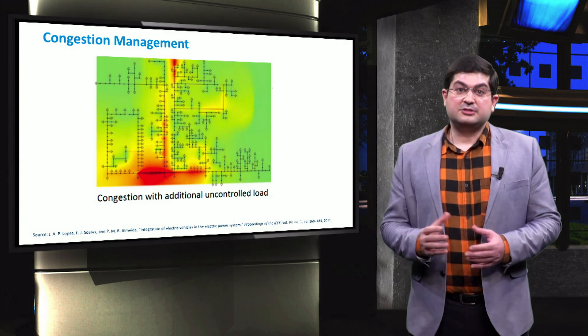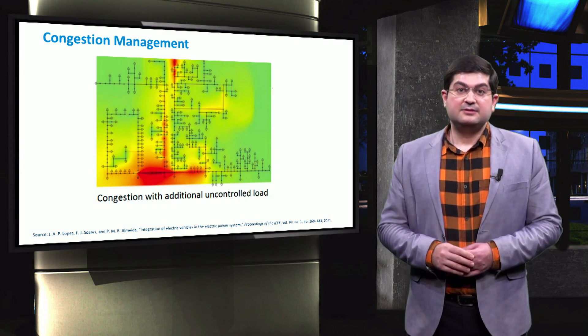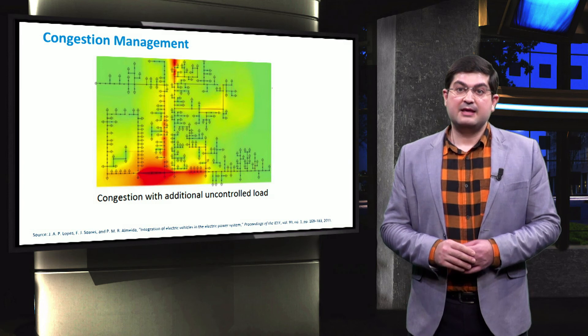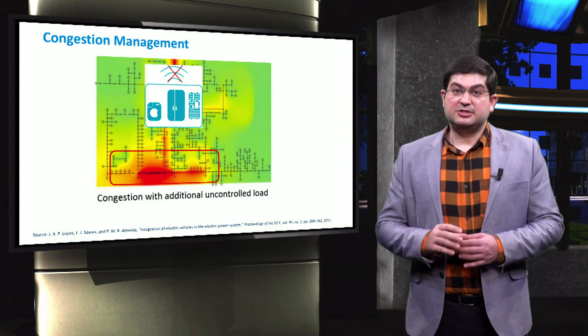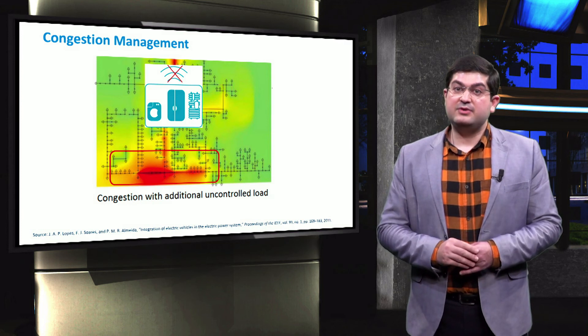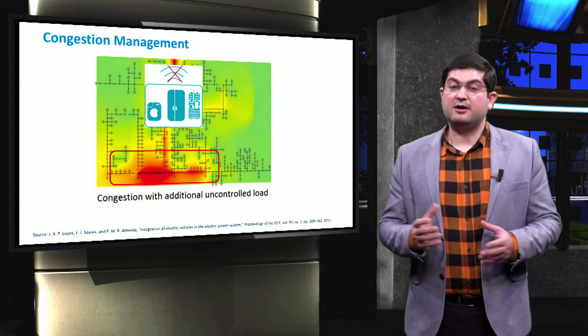If the load of new technologies like electric vehicles is added to this distribution feeder, as can be seen, the line becomes heavily congested for the case that electric vehicles are charged in an uncontrolled manner.